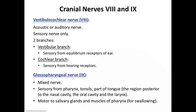Cranial nerve number nine is the glossopharyngeal nerve — a mixed nerve associated with the tongue and pharynx. These nerves arise from the medulla oblongata and conduct impulses from the lining of the pharynx, tonsils, and posterior tongue to the brain. Their motor component innervates certain salivary glands and constricts a muscle in the wall of the pharynx that functions in swallowing.